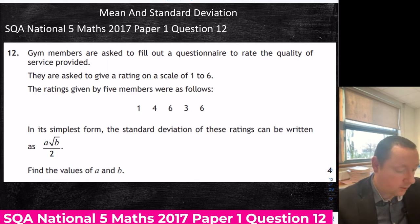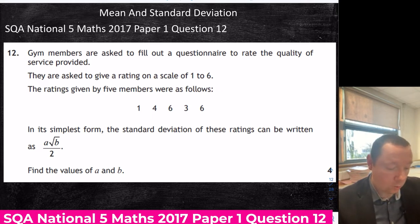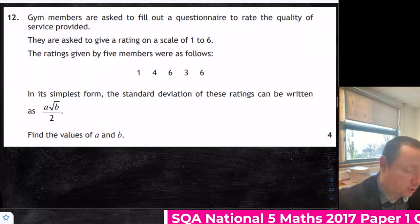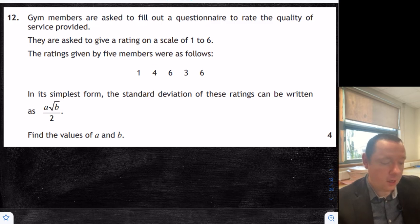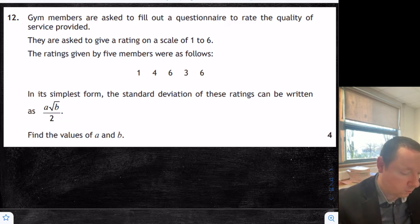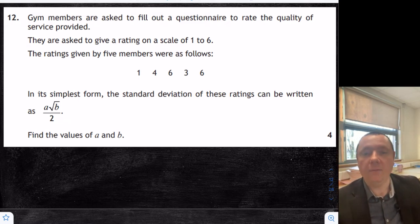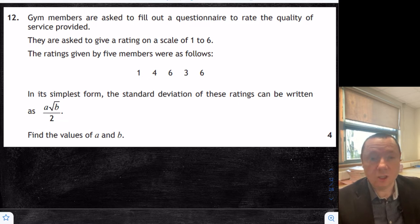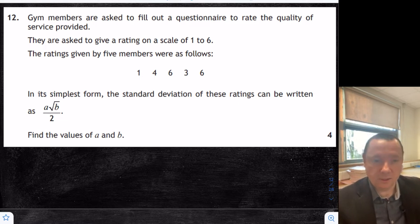Now a mean and standard deviation question — this time in SQA National 5 Maths 2017 Paper 1 Question 12. So again, a non-calculator one. Gym members are asked on a questionnaire to rate the quality of service provided. They rated on a scale of 1 to 6. Five gym members picked 1, 4, 6, 3, 6. In its simplest form the standard deviation can be written as a root b over 2. Calculate the values of a and b. That means we're combining this with surds, but your first step is to calculate standard deviation.